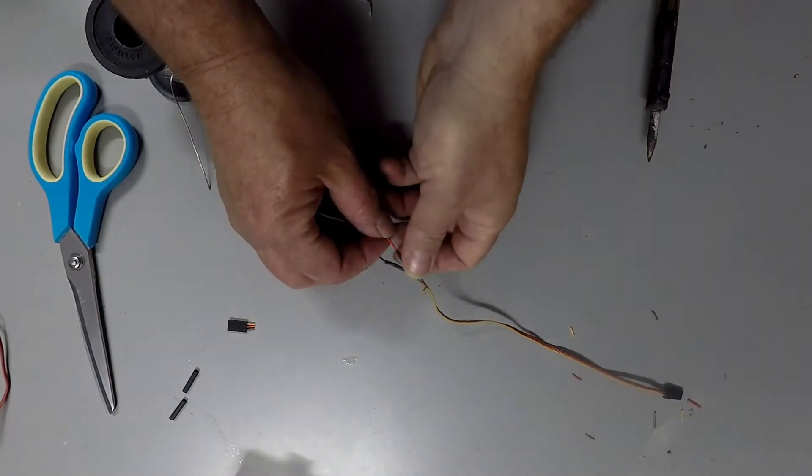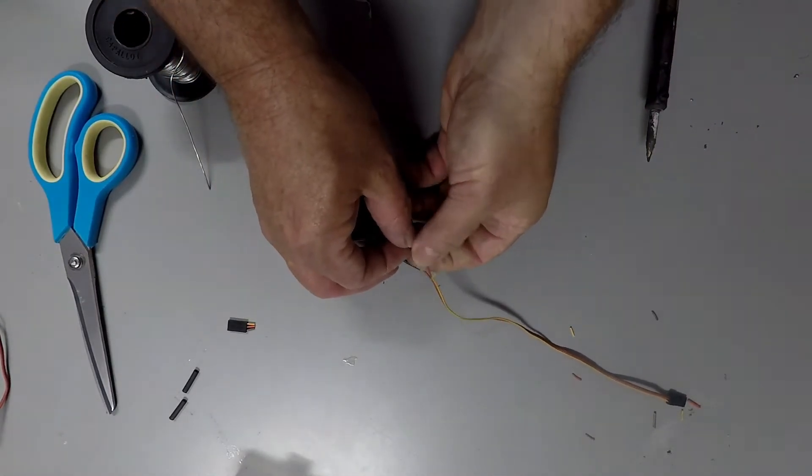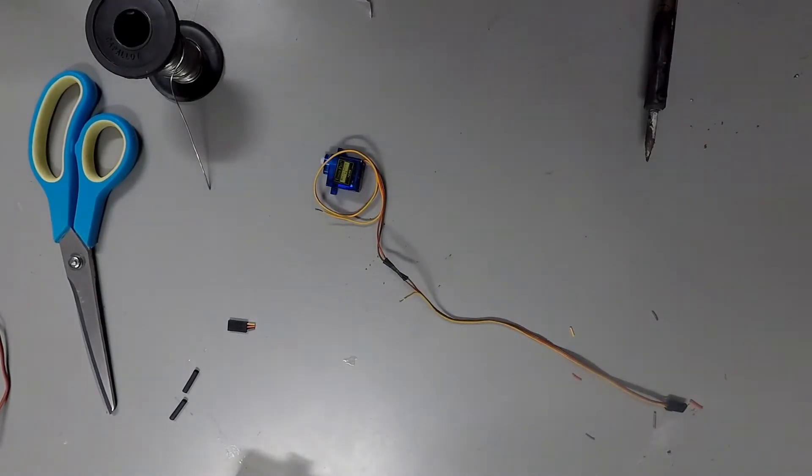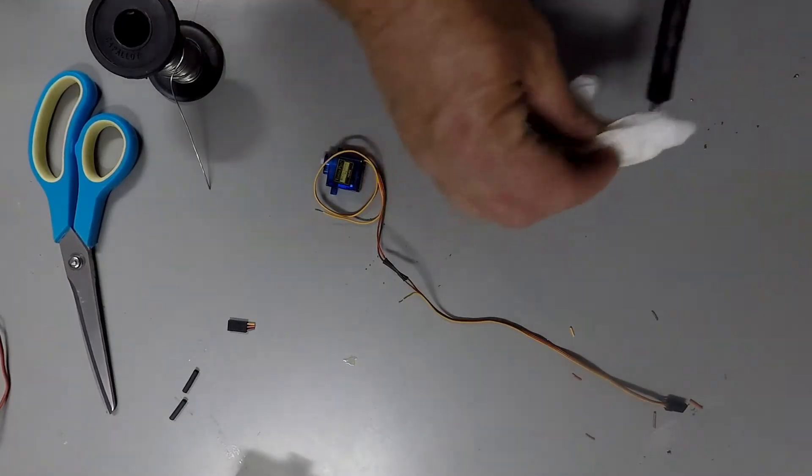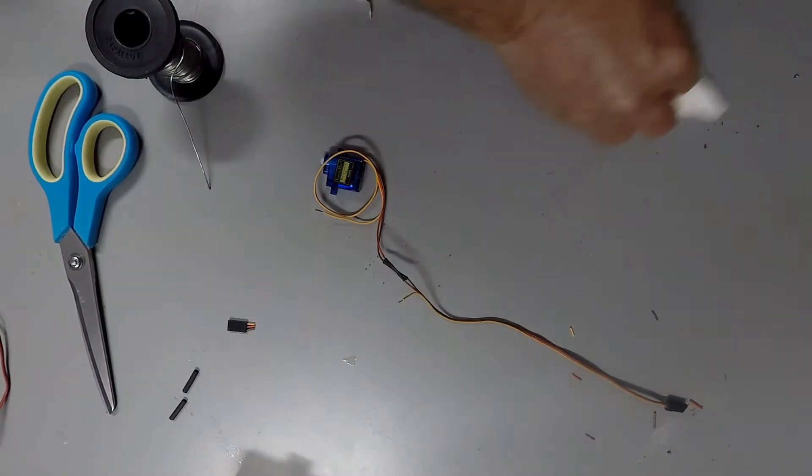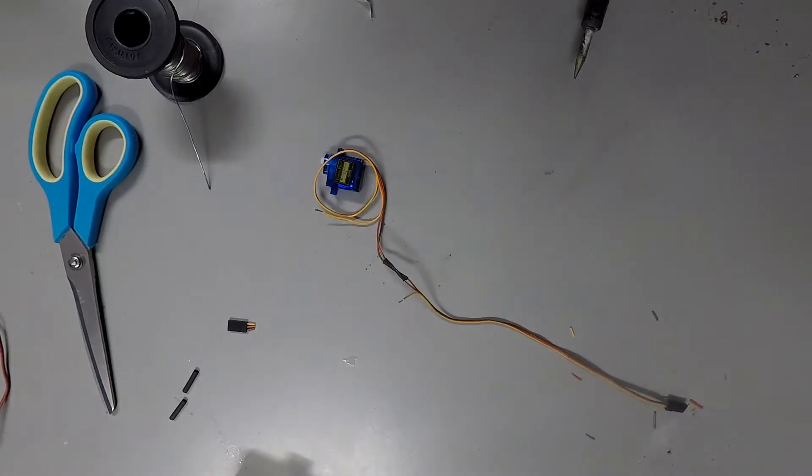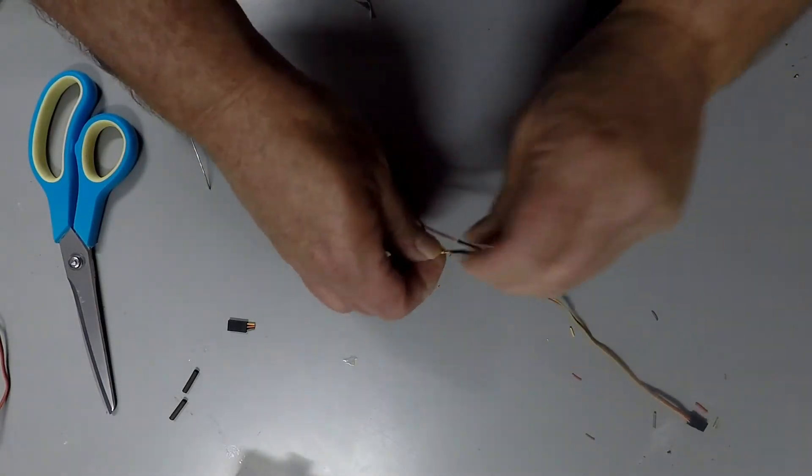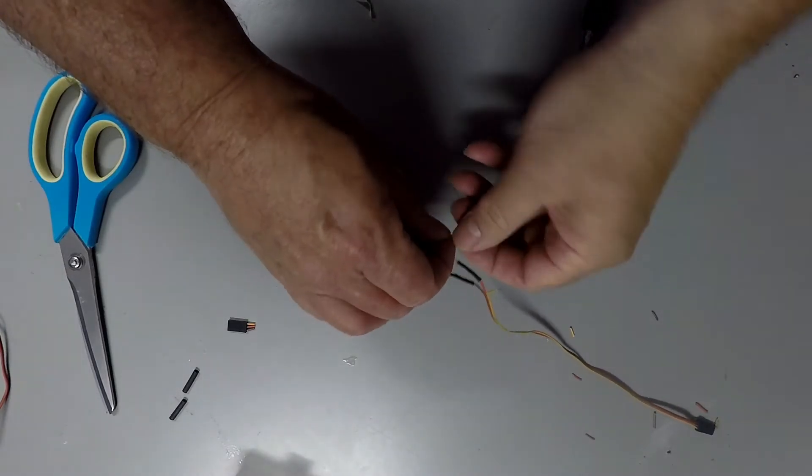Right. That one's done. So I'm just going to clean those little bits of metal off. Might just give my soldering iron a quick wipe down. You'd be surprised how quickly it builds up junk on it. Alright. On to the next one. We're on the home straight for this fella.